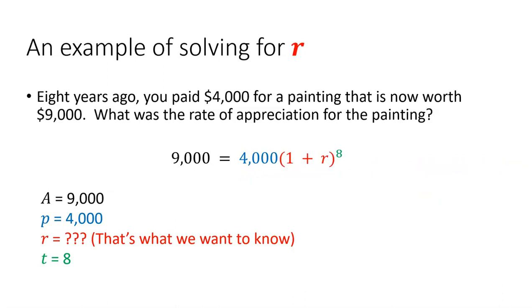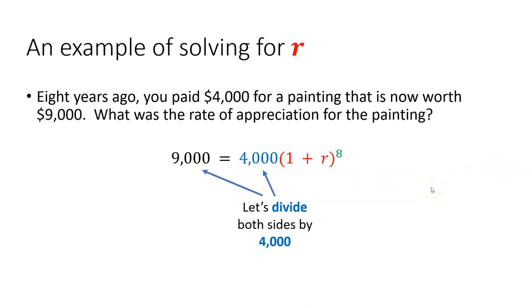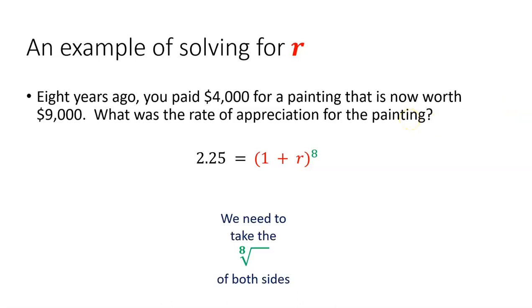So now we'll put all those things into our formula. And we're ready to solve for r. What will we do first? R is inside parentheses going to the eighth power. Let's first divide both sides by 4,000. That will get our exponential term all by itself on the right-hand side. So when we divide both sides by 4,000, we get 2.25 on the left and all of 1 plus r to the eighth power on the right. We want to get r all by itself, but it's part of an expression that's going to the eighth power. We're going to have to take the eighth root of both sides.